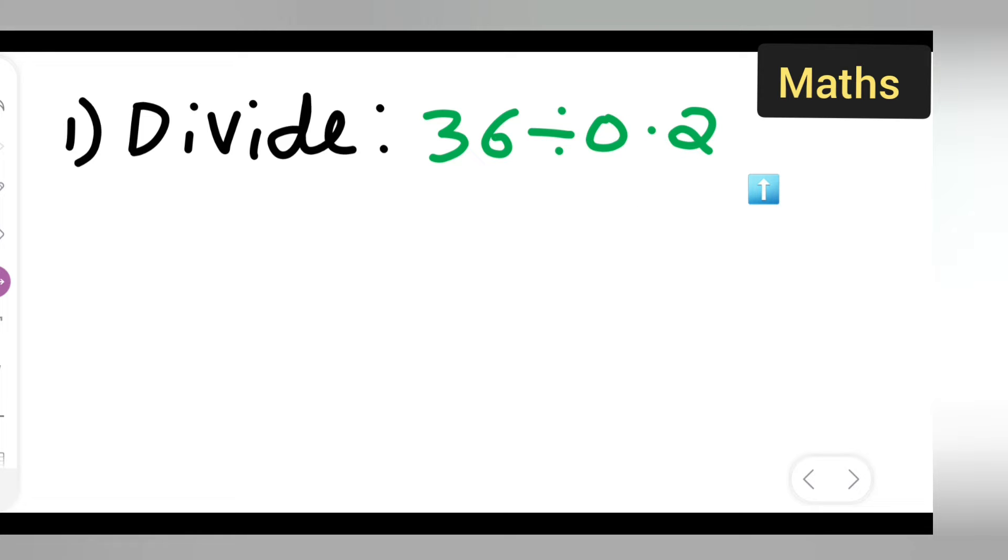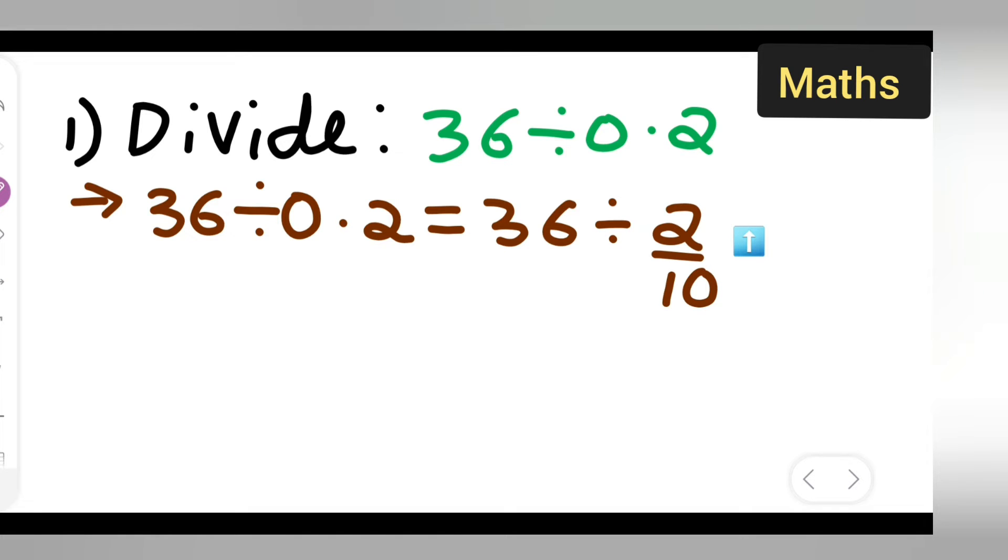How to divide when you have a decimal number, a number with a decimal point? So first what I'll have to do is write down this: 36 divide by 0.2 is equal to 36 divide by... Now if you want to remove the decimal point, what I'll have to do is 2 upon 10. 2 upon 10, because I have removed the decimal point.